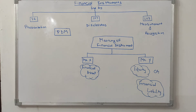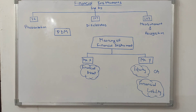In simple terms, consider a contractual agreement like a loan. If Mr. X has given a loan to Mr. Y, then for Mr. X it is a financial asset — he gets the right to receive cash in exchange for the loan given. For Mr. Y it is a financial liability, because it creates an obligation to repay the loan in cash. We will see the definitions of financial asset and financial liability in coming videos.